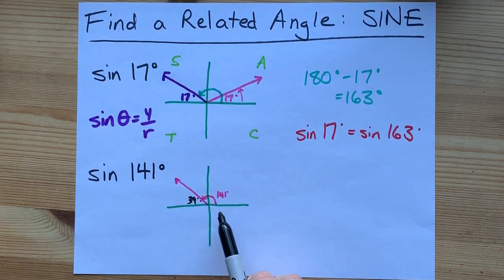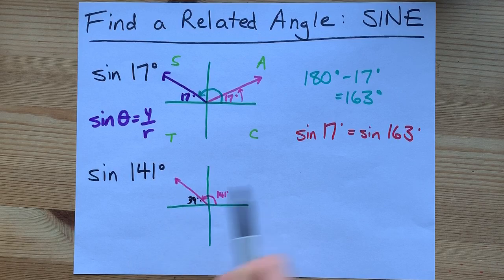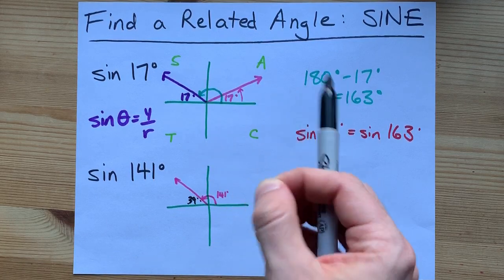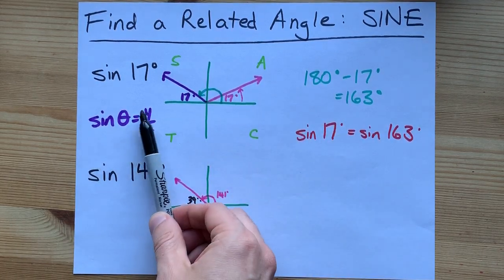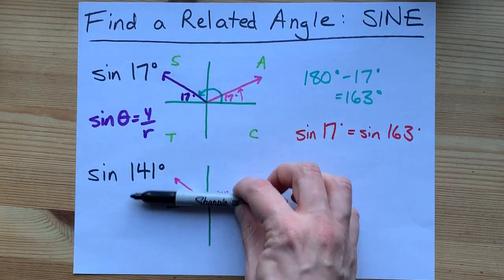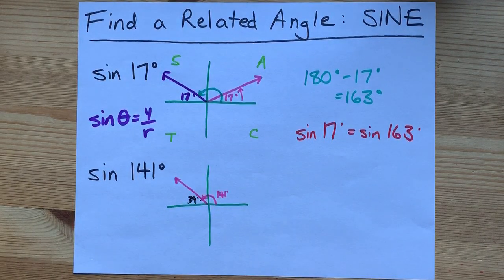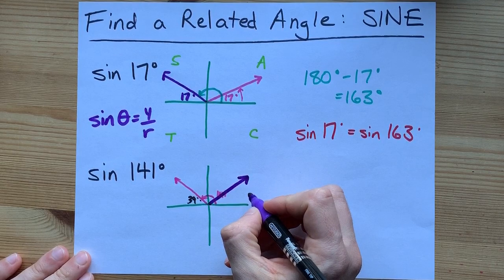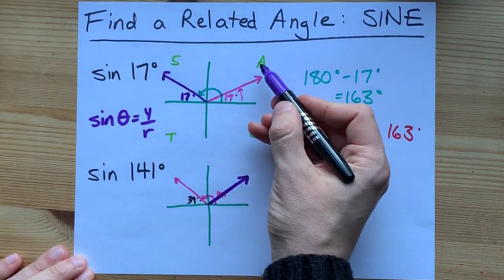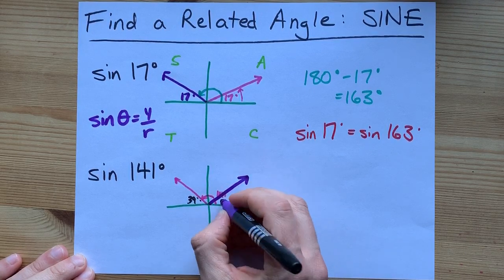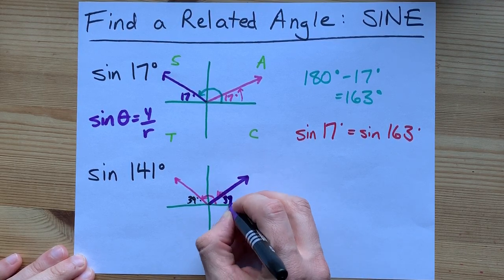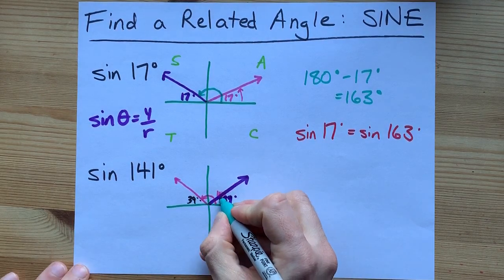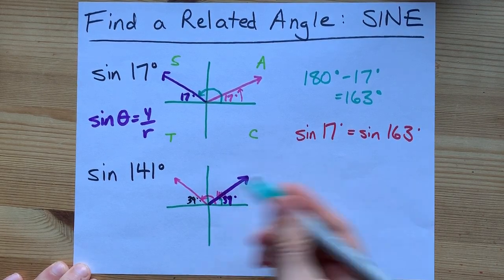But the real question here is, is sine positive or negative here? Well, this is the S quadrant of the CAST rule, so it's positive. But if you really want to understand what's happening, you have to remember sine is y over r, and these are positive y values above the x-axis. Where else is sine positive? It's also positive here, above the x-axis, or in the A quadrant where they're all positive. What angle is this? It has to be the same acute angle, so it's 39 degrees. And how far is it to get from the positive x-axis to there? Well, it's clearly 39 degrees. So you're done.